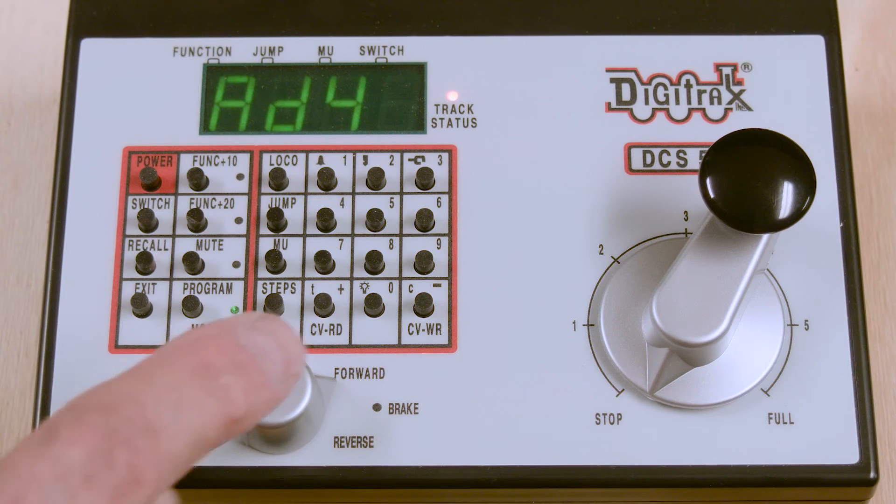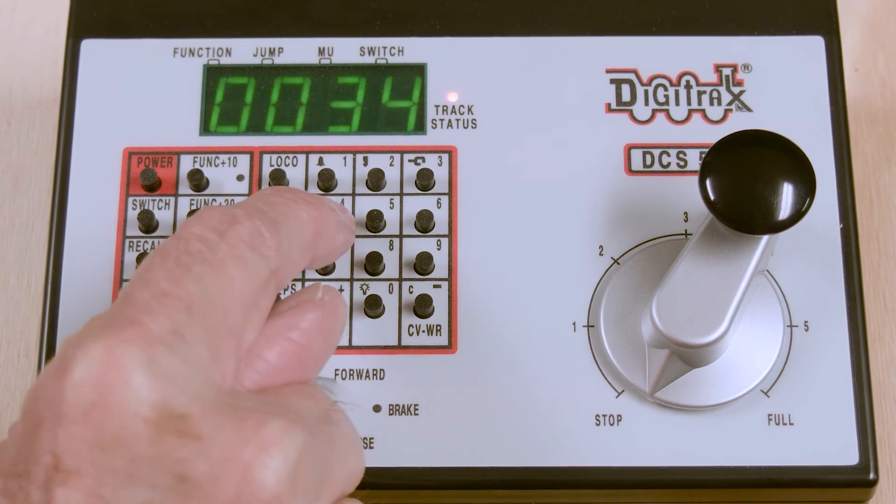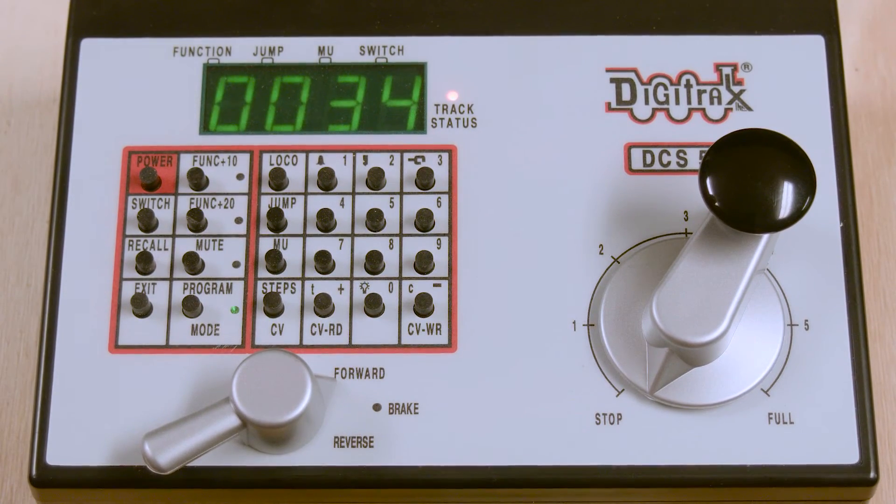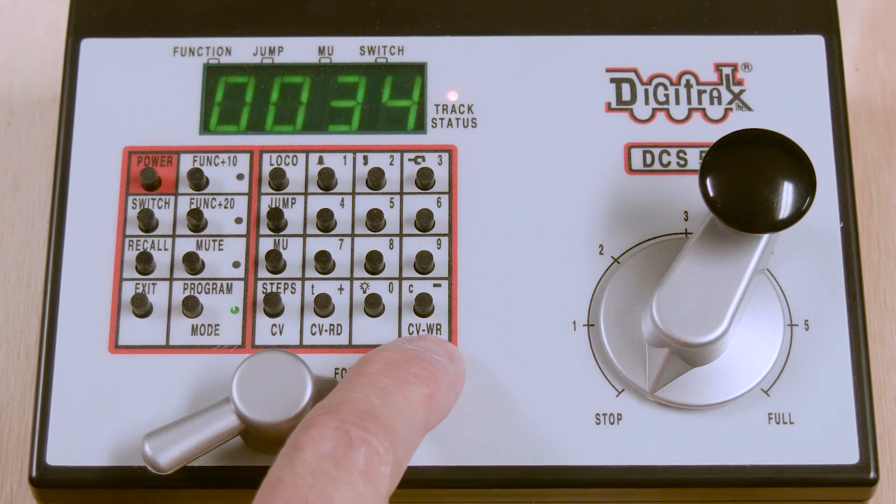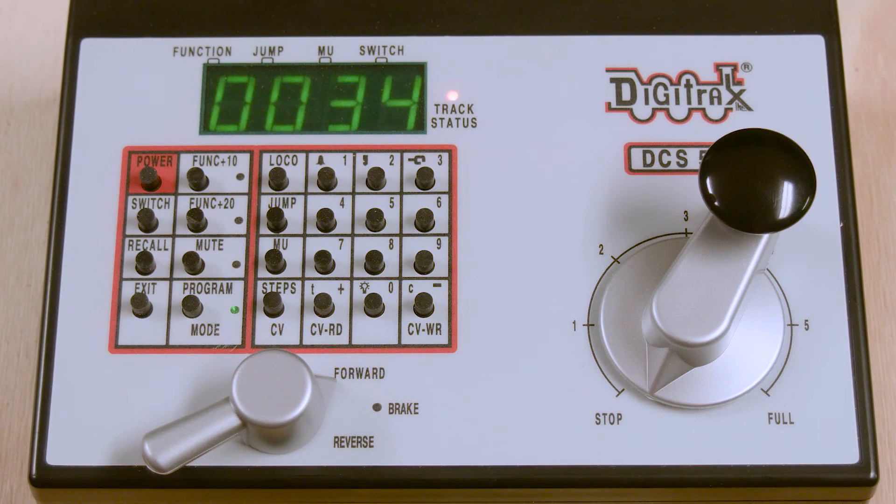We then press 49, since CV49 is the CV that controls the headlight function. We will then press the steps key a second time, and then we're going to press the value of 34 into the Zephyr, and that's going to give us the effect that we want, in this case a Mars light. We then press the CVWR key to program that value into CV49 to give us the Mars light.